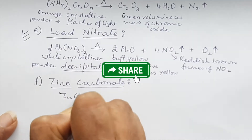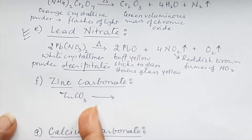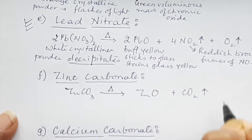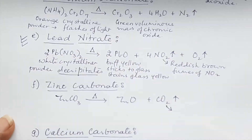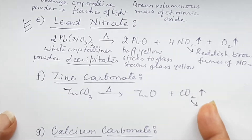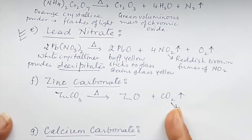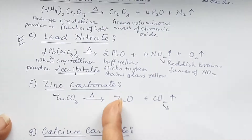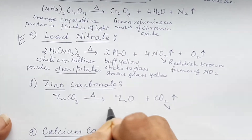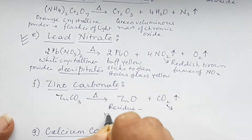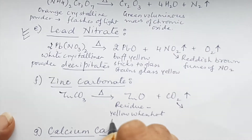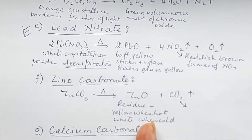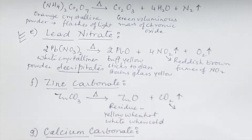Zinc carbonate, ZnCO₃, is like copper carbonate — on heating it also gives the oxide remaining and CO₂ given out. Carbon dioxide is colorless odorless gas which turns lime water milky and has no effect on acidified potassium dichromate solution. The ZnO residue is yellow when hot and white when cold — the same observation we saw for zinc nitrate.